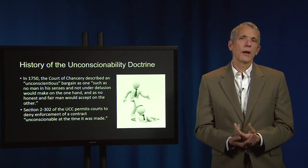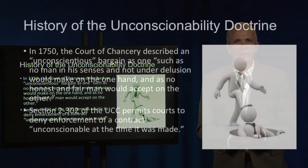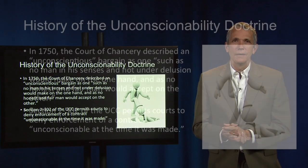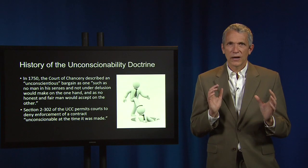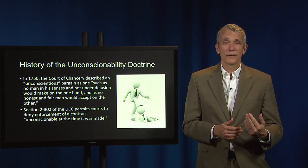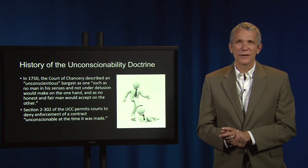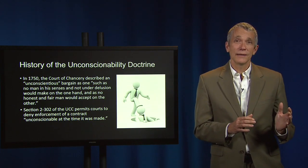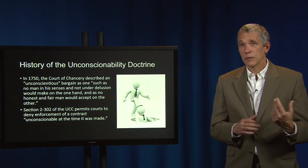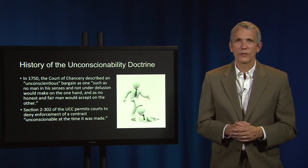Crucial in this process was the publication and enactment of UCC Section 2-302, which permitted courts to deny enforcement with regard to contracts for the sale of goods where a contract is unconscionable at the time it was made. This language — unconscionable at the time it was made — makes clear that the doctrine is a formation defense to be judged at the time of a contract's formation, as opposed to the impracticability defense that we'll study later, which often concerns impracticability or impossibility that arises after the contract is formed.